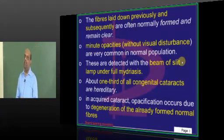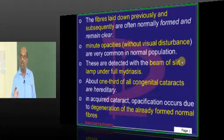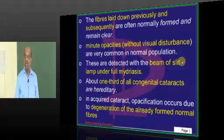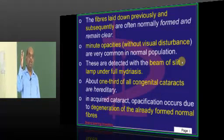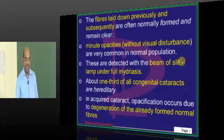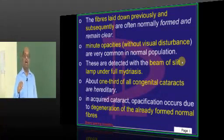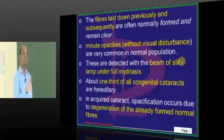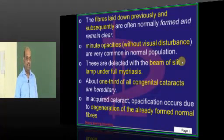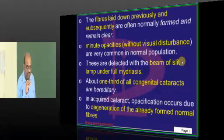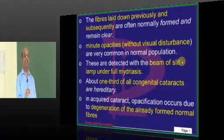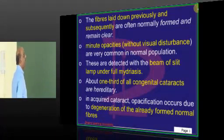In developmental cataract, for example, if at the second year of life a developmental cataract forms, all fibers which formed before the second year won't be affected, and those that form after the second year will also not be affected. Only those fibers present at the time of the insult get affected. Hence, only a zone is involved — that is the speciality of developmental cataract.